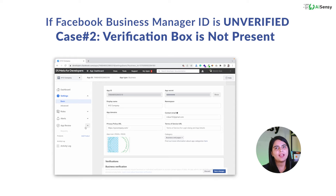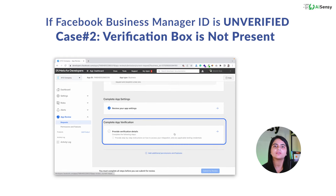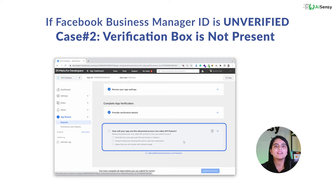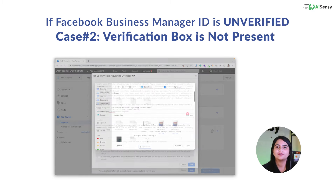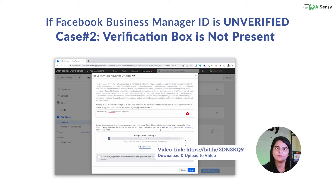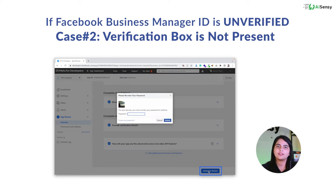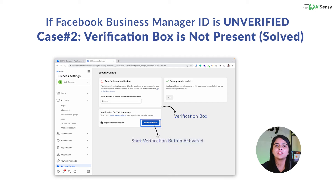Once the changes are saved, on the left panel go to App Review, then Requests, and click on Edit. Complete your verification by clicking on Provide Verification Details. Write one line about your company, copy it, and save it. Click on 'How will your app use the Advanced Access Live Video API feature?' and paste the same line. Upload a video of five to ten seconds — I'm sharing the link so you can download and use that video. Once the video is uploaded, tick the checkbox and approve it, then save it. Click on Submit for Review and enter your password. Once submitted, go to Security Center on your Facebook Business Manager. You'll be able to see the verification box with the start verification button activated.